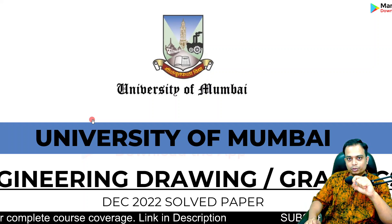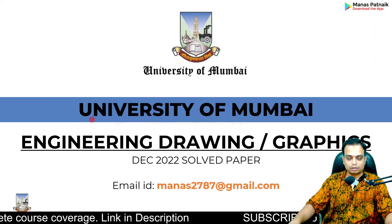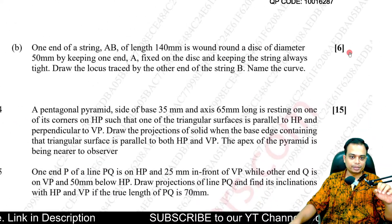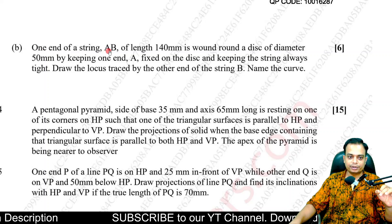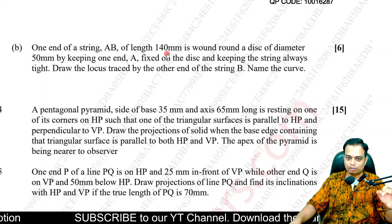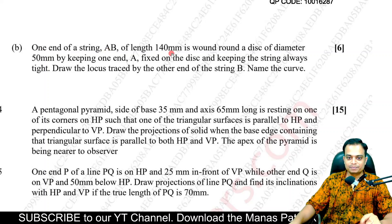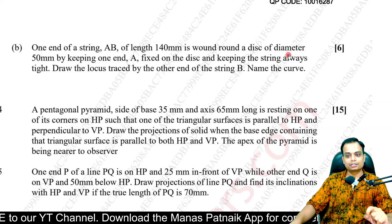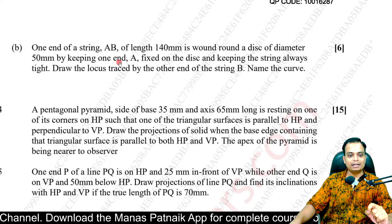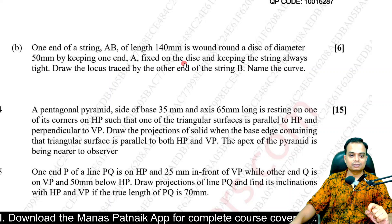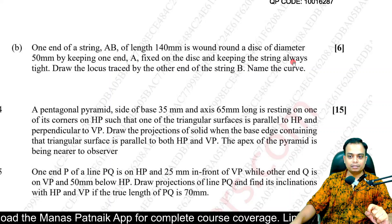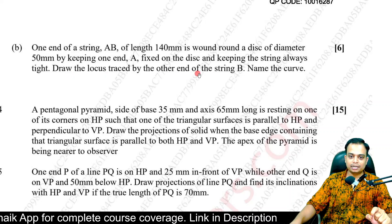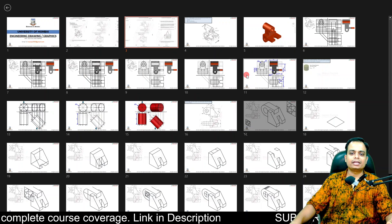Now let's shift our focus to Question 3 Part B, which is based on an involute for six marks. One end of a string AB of length 140 millimeters is wound around a disc of diameter 50 millimeters by keeping one end A fixed on the disc and keeping the string always tight. Draw the locus traced by the other end of the string and name the curve.